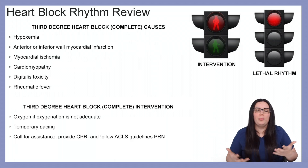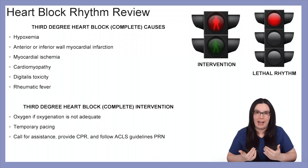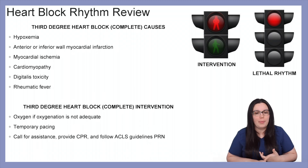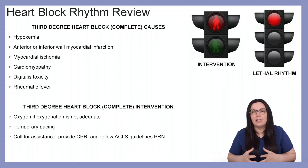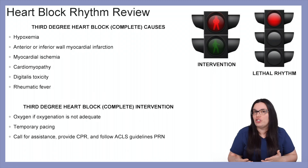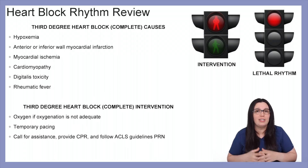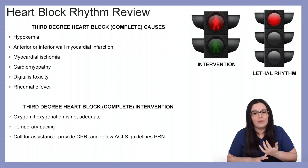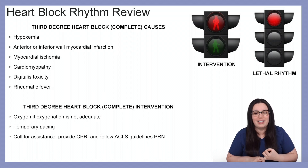Third degree heart block causes include hypoxemia, anterior or inferior wall myocardial infarctions, myocardial ischemia, cardiomyopathy, digitalis toxicity, as well as rheumatic fever. For interventions: oxygenation if oxygen is not adequate, consider temporary pacing if the patient is more stable. If the patient becomes unstable and we lose a pulse, call for assistance, provide cardiopulmonary resuscitation, and follow the ACLS guidelines.